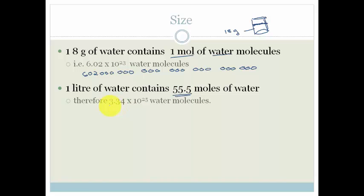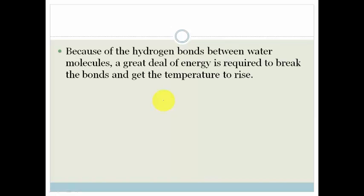Because of the hydrogen bonds between water molecules, a great deal of energy is required to break the bonds and get the temperature to rise. And energy is also released when the water is cooled. And thus, the sea acts as a heat reservoir and allows the Earth to have a moderate climate.